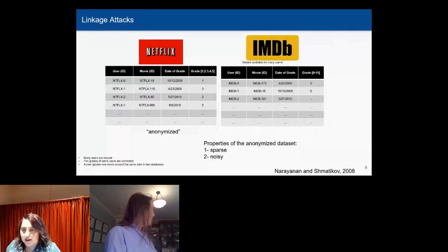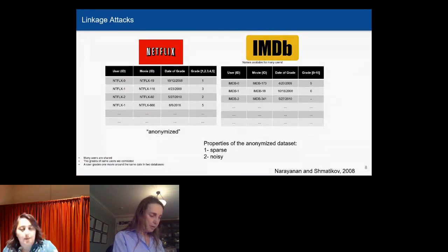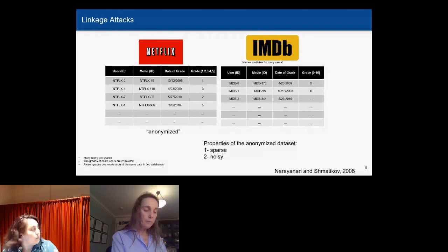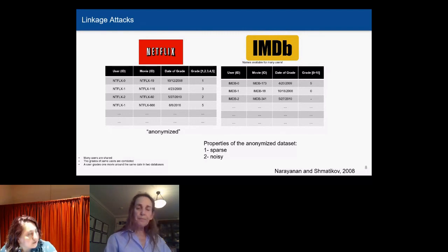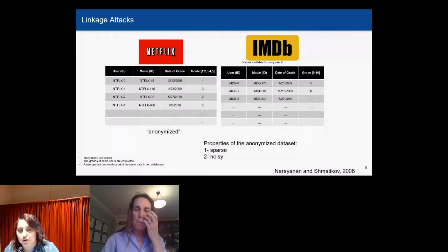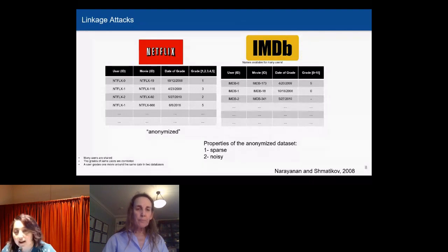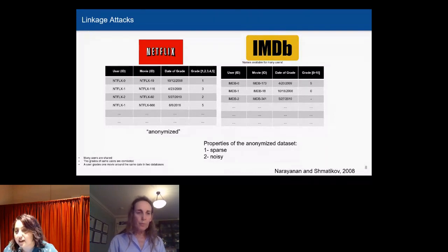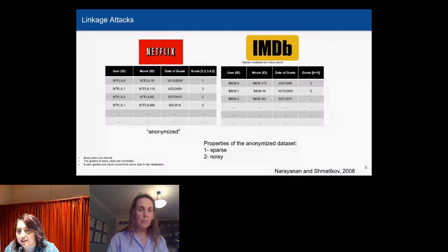One of the ways to quantify information leakage is to perform linkage attacks. We were really inspired by this paper in 2008, when Netflix put out this challenge, where they published anonymized user IDs and their movie preferences for a data science challenge. Researchers showed that you can actually use IMDB as auxiliary information to figure out the people's names in the dataset. One of the key properties of this linking attack was that this anonymized dataset was very sparse and noisy.